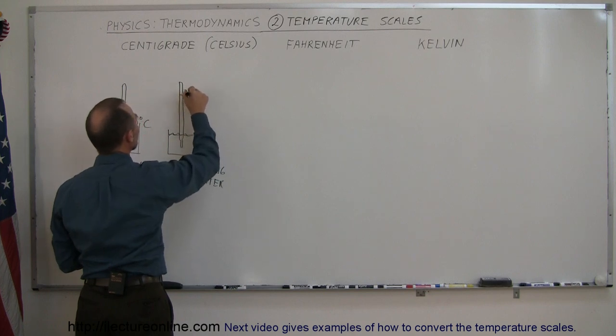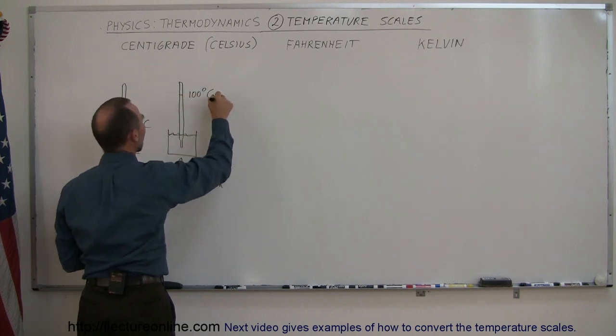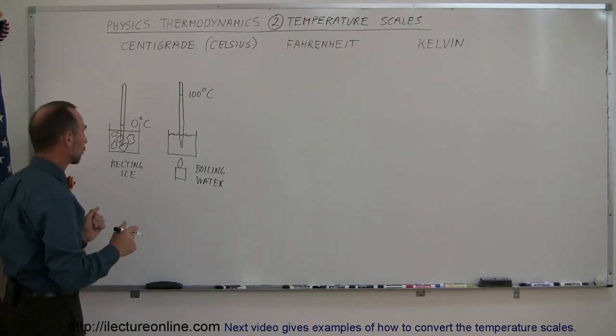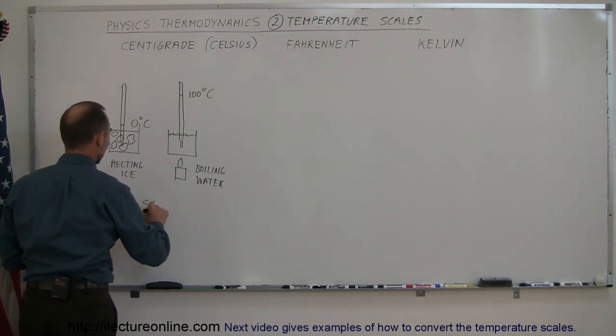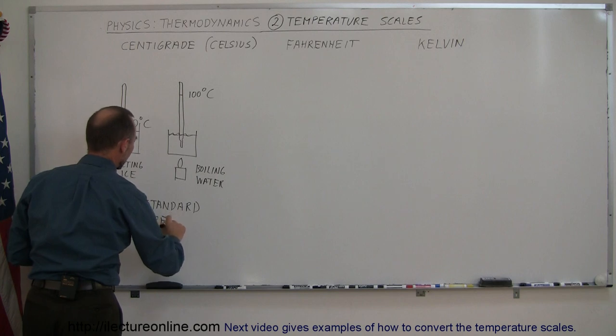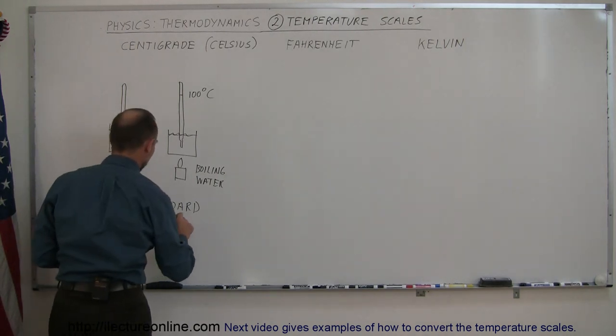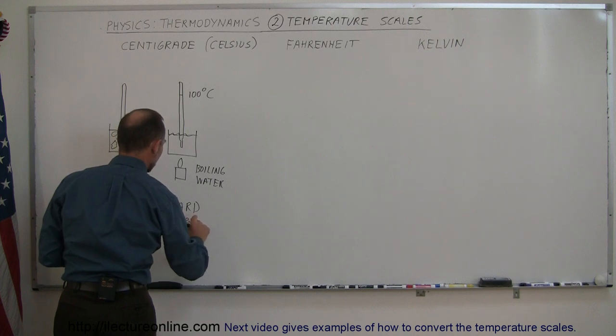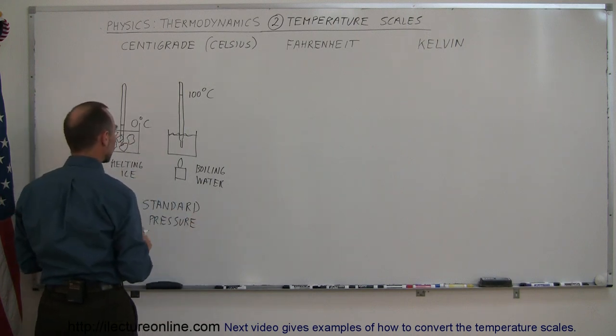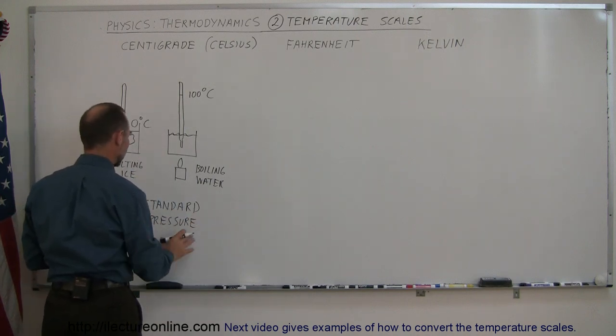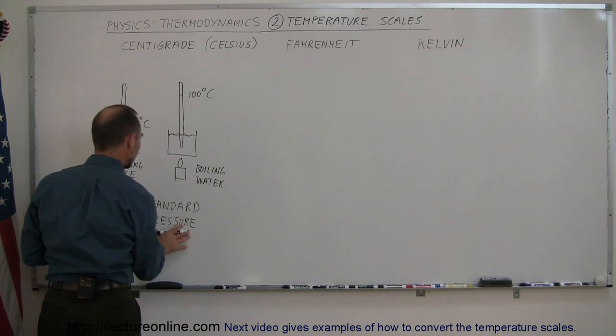Now the temperature will read 100 degrees centigrade. Of course, both of those things have to occur at standard pressure, because we will find that the boiling point of water will change under different pressure, and also to some extent, the melting point of ice will also change at certain pressure. So standard pressure, that was one atmosphere, exactly.